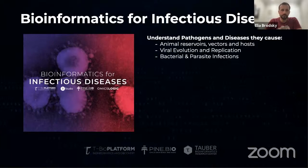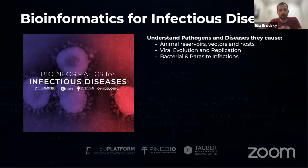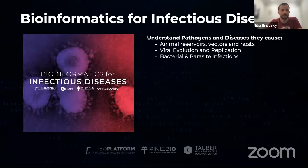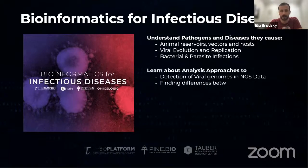As a result of this program, you will be able to understand the pathogens from a genomics perspective, being able to identify them in animal reservoirs, vectors, and hosts, and understand how to apply analysis methods to study viral evolution, replication, and adaptation. We'll also talk about bacterial and parasite infections, how they are different from viral infections, and how we can apply similar methods to study their complexity and the variation in disease they cause.